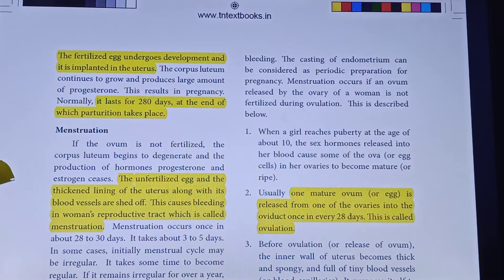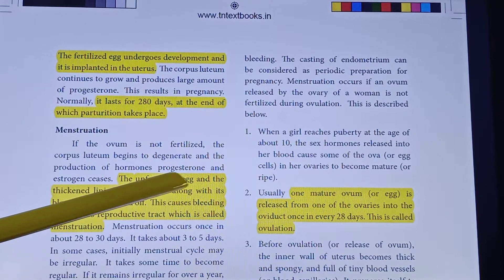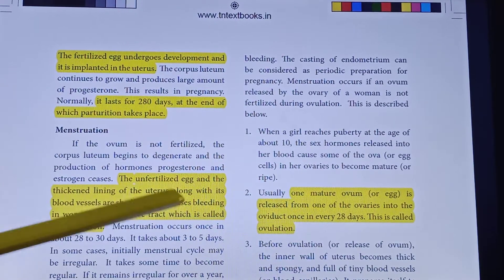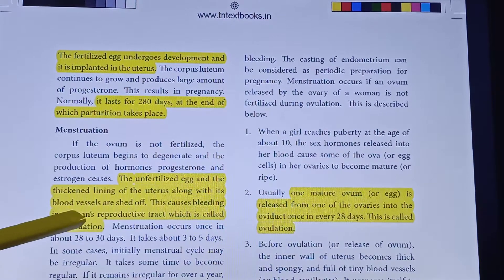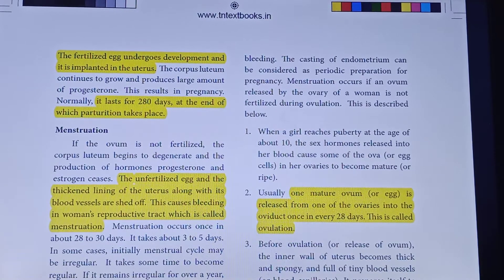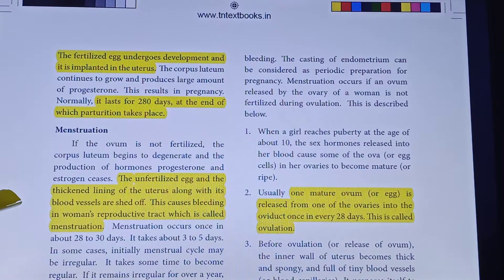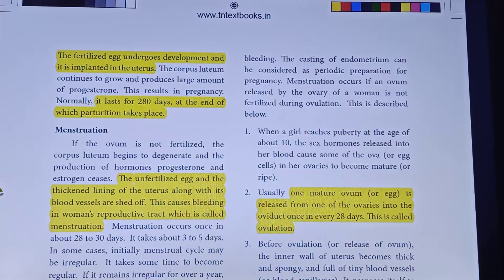If the egg is unfertilized, the thickened lining of the uterus along with its blood vessels is shed off. This causes bleeding in the women's reproductive tract, which is called menstruation.